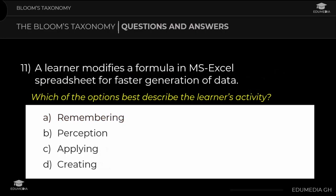Question 11: A learner modifies a formula in Microsoft Excel spreadsheet for faster generation of data. Which option best describes the learner's activity? a) remembrance, b) perception, c) applying, d) creating. The answer is creating.